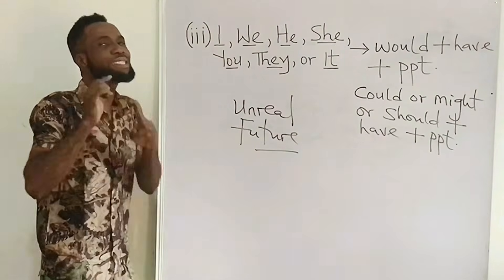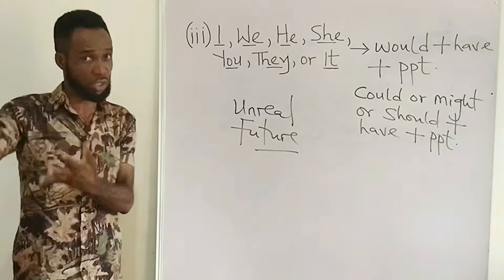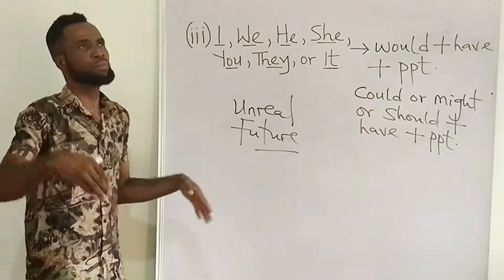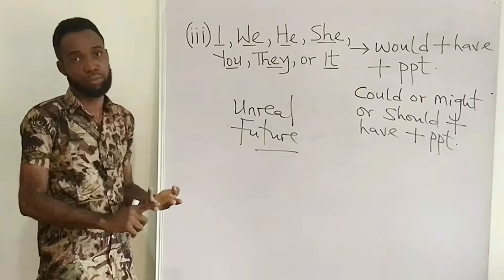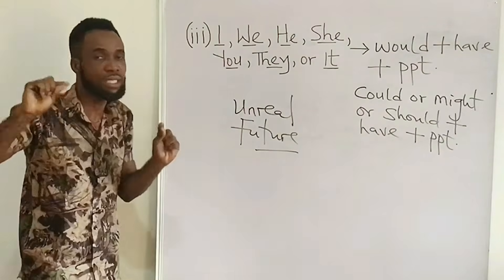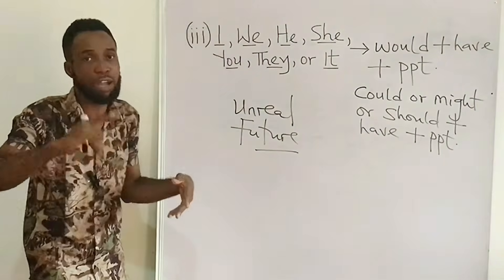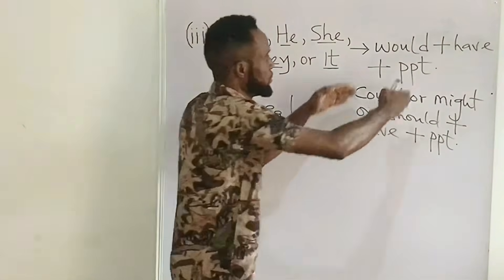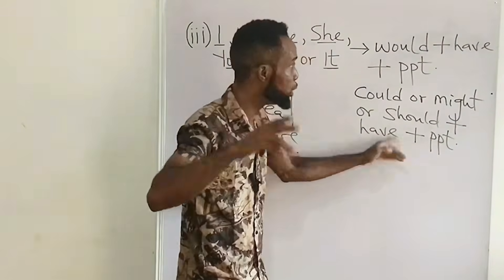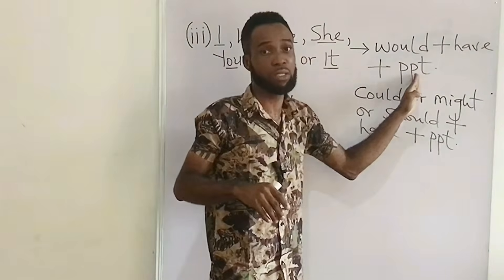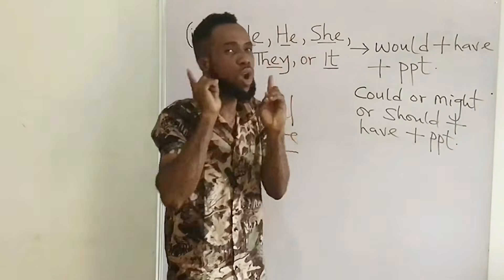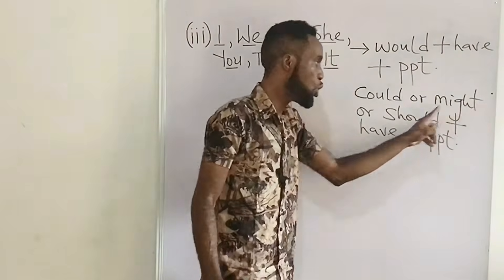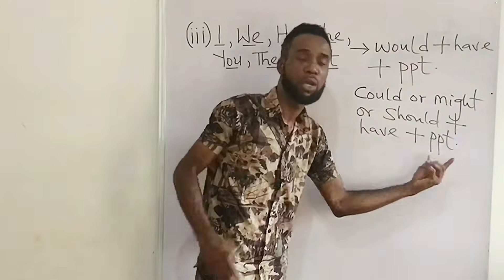In summary, anytime you are asked a question under real and unreal future, you first have to look for the option containing a real future — the answers from Rule 1 and Rule 2. If you cannot find a real future in the options, then look for an unreal future, and it must first be 'would + have + PPT.' It is only when you cannot find that one that you look for 'could,' 'might,' or 'should' plus 'have' plus a past participle verb.